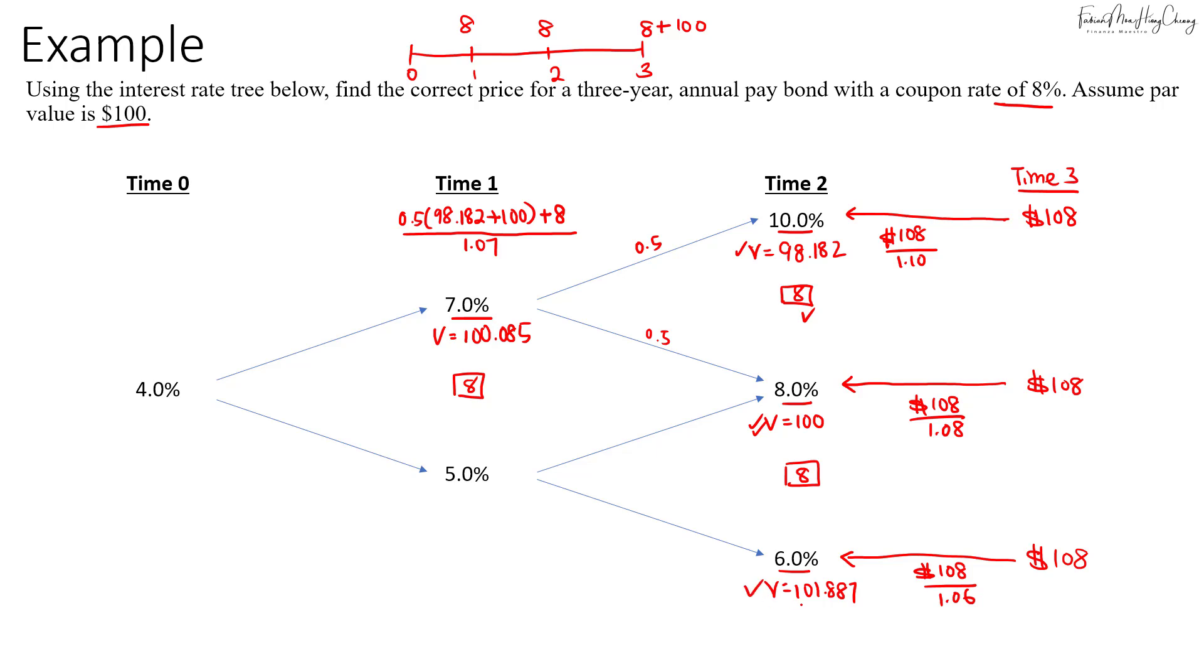And then for the next two cash flows here, for 100 and 101.887, we'll discount it back at 5%. So the value here will be based on 0.5 times the average, the sum of 100 and 101.887. Then we'll add in the coupon, $8 here. Then we'll discount this at 5%, so that will give us 103.756.